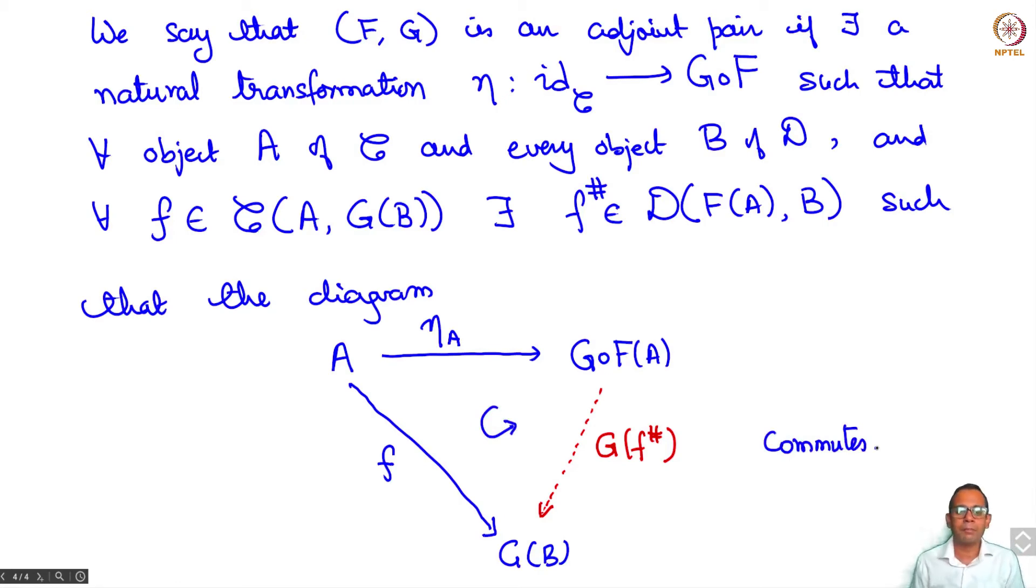This sets a bijection. I should say there exists a unique f sharp. So uniqueness is also required. So this sets up a bijection.